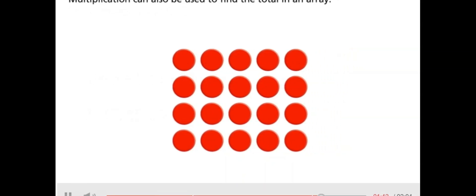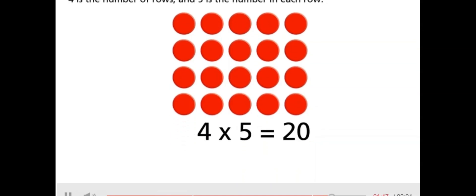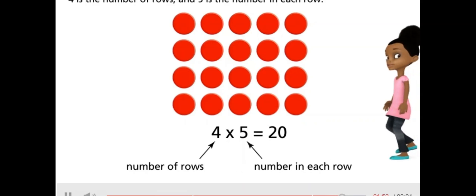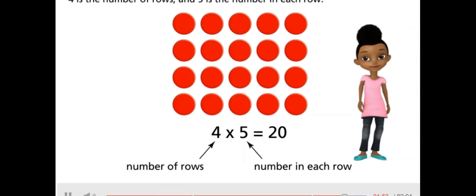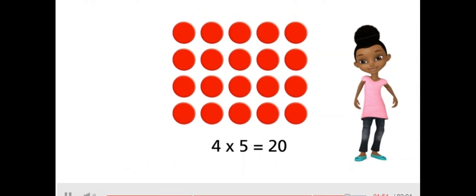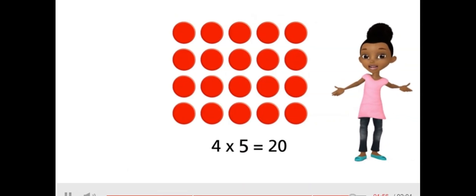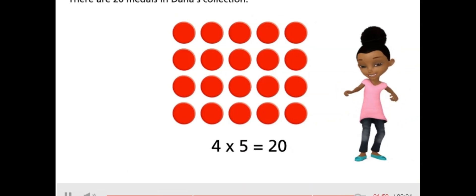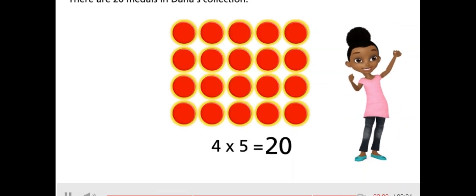Multiplication can also be used to find the total in an array. 4 is the number of rows and 5 is the number in each row. You say 4 times 5 equals 20. There are 20 medals in Dana's collection.